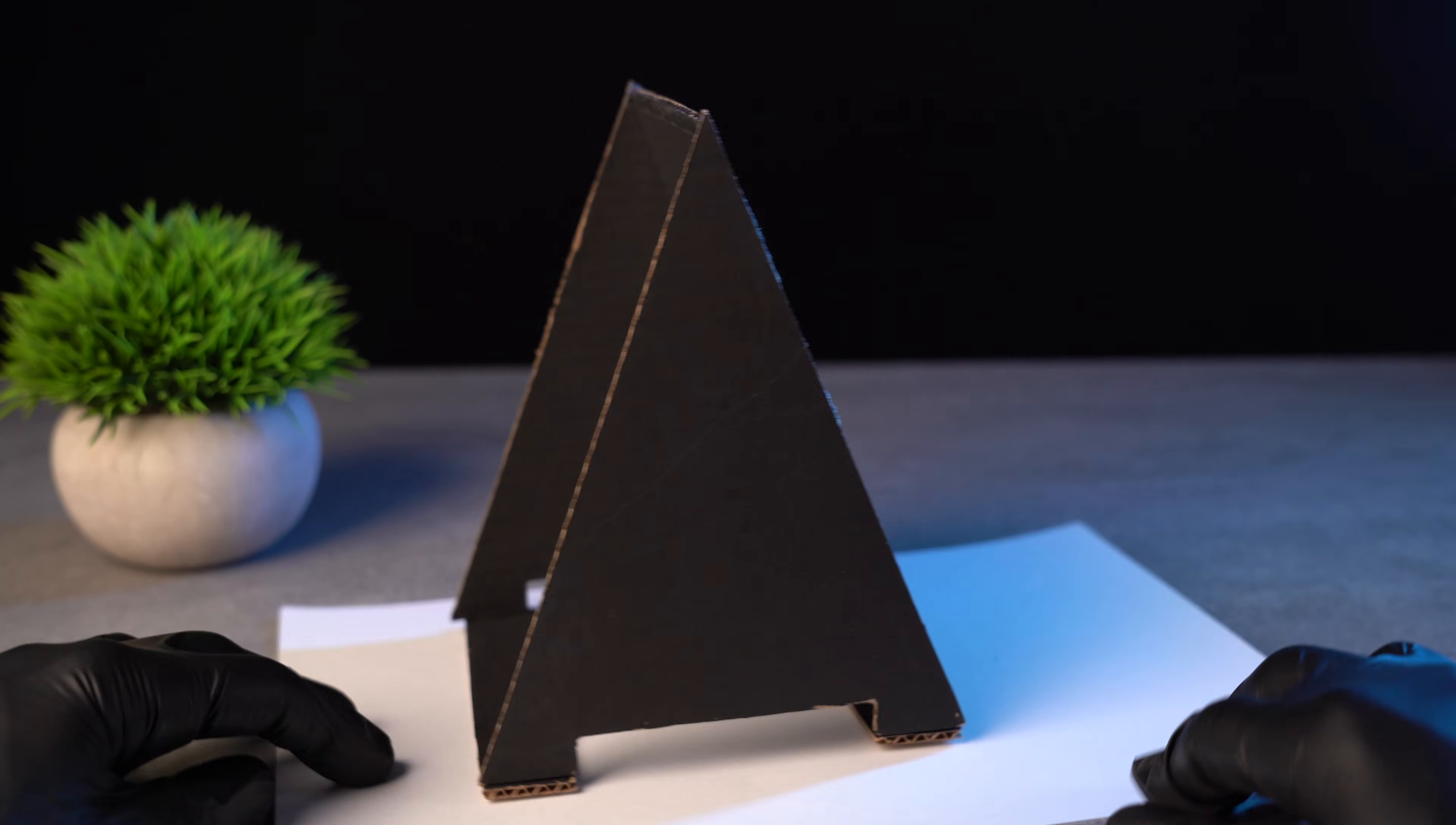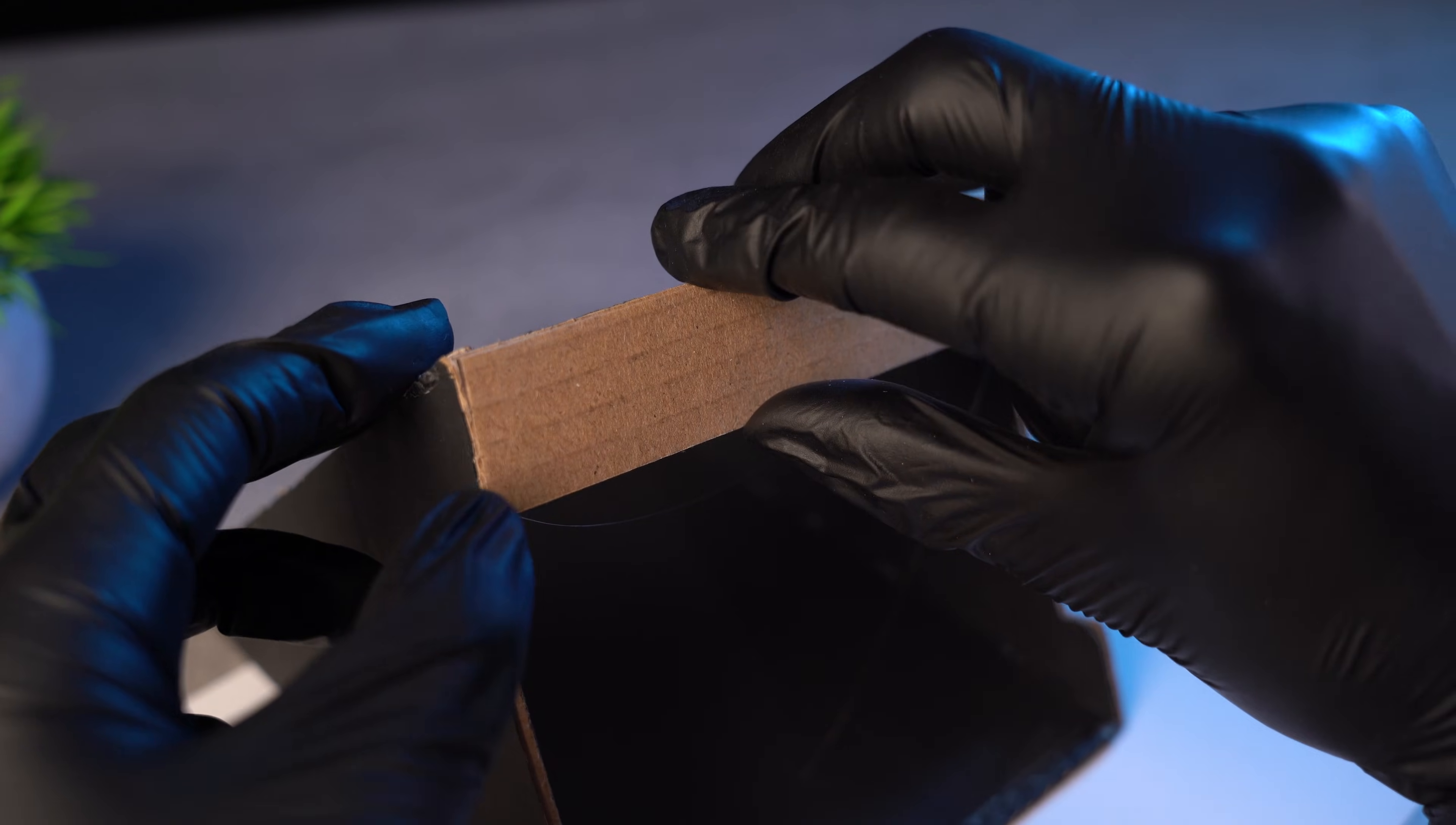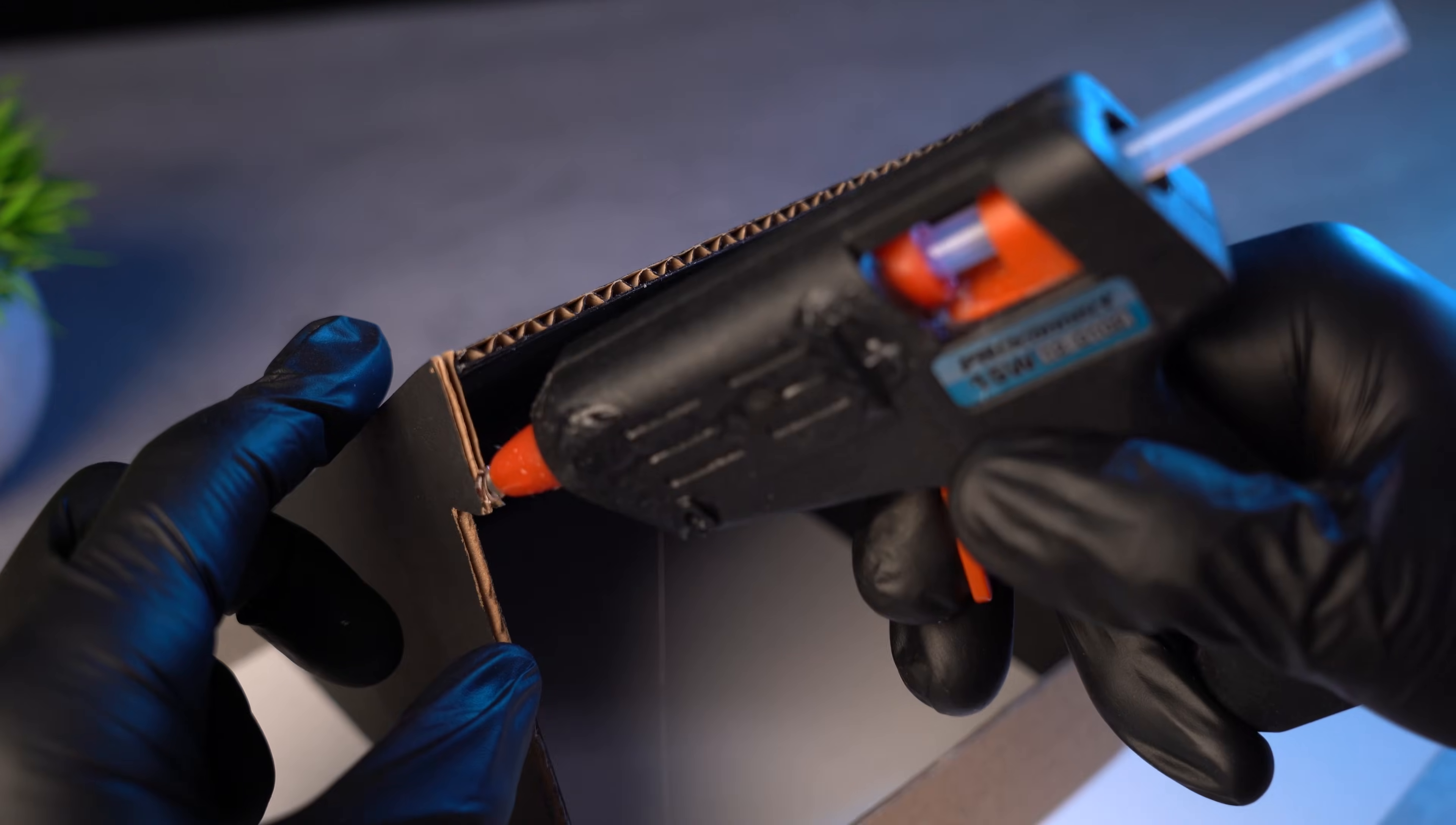Place them like this. Apply hot glue, and press them down. Flip the structure over and do the same with the second strip.